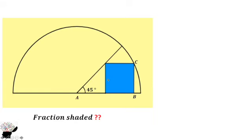If this side is 1, this side is also 1. From here, this side is 1, this side is also 1. The square, all the sides are equal, so this side is also 1.